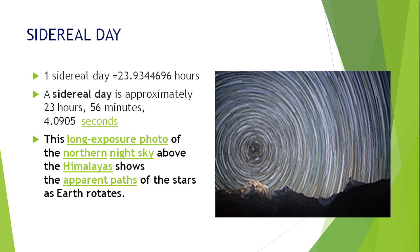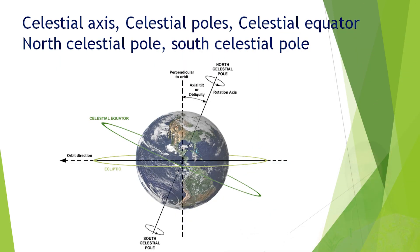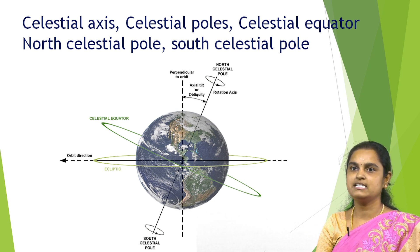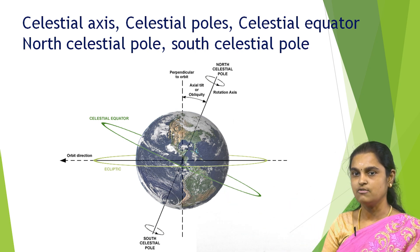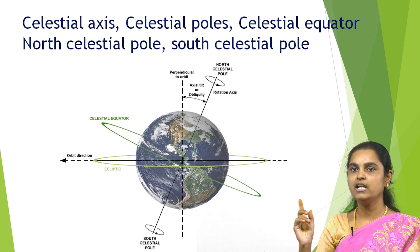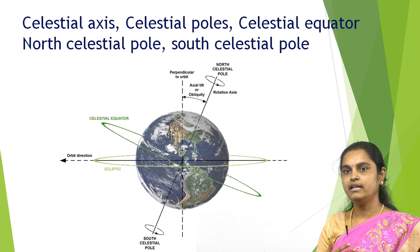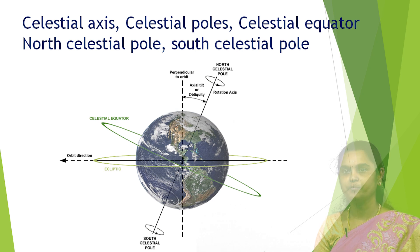This long-exposure photo of the northern sky above the Himalayas shows the apparent paths of the stars as earth rotates. The next diagram represents the axis, pole, equator, north celestial pole and south celestial pole. Considering earth as the celestial object, the centre line perpendicular to the pole is called the perpendicular orbit, and the tilted line is the axis line. The line parallel to the perpendicular line is called the line of ecliptic, the circle parallel to the pole is the celestial equator, and the angle between the perpendicular line and the north celestial pole is called the angle of obliquity.